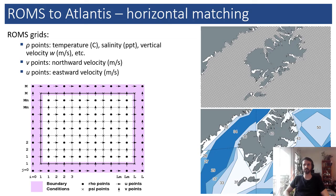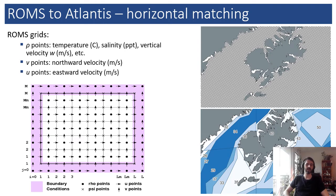The rho grid is denoted by the dots in the graph in the bottom left corner of this slide. There are also two velocity grids denoted by the arrows: the V grid for the northward velocity and the U grid for the eastward velocity. We use these two combined to calculate water transport across faces in Atlantis.